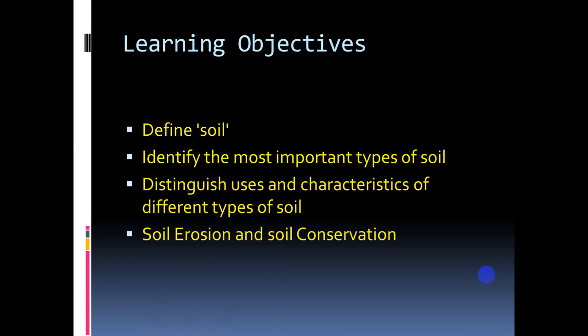In this chapter we will learn: what is soil, identify the most important types of soil, distinguish the uses and characteristics of different types of soil, soil erosion, and soil conservation. These are all the topics we have to learn in this chapter.